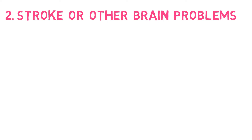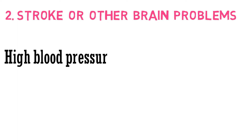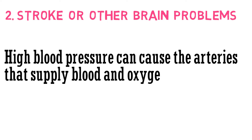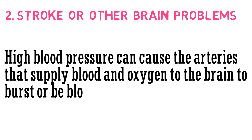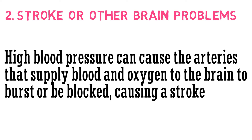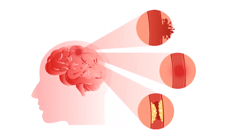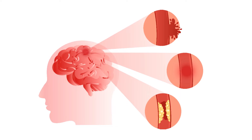Hypertension can also lead to stroke or other brain problems. High blood pressure can cause the arteries that supply blood and oxygen to the brain to burst or be blocked, causing a stroke. In this image, there are three ways depicted that result in a stroke.